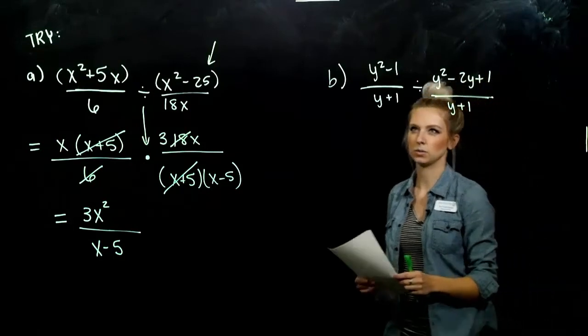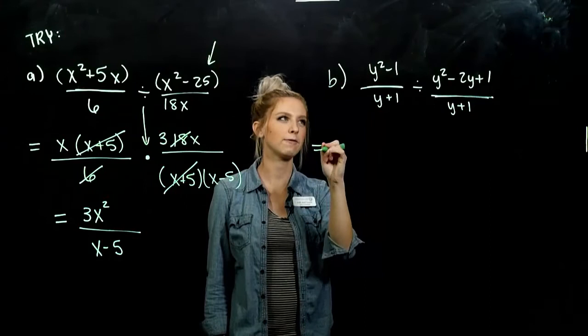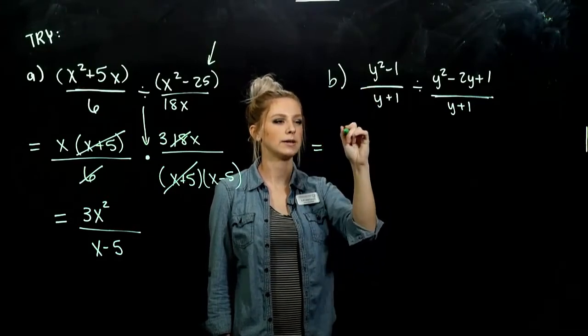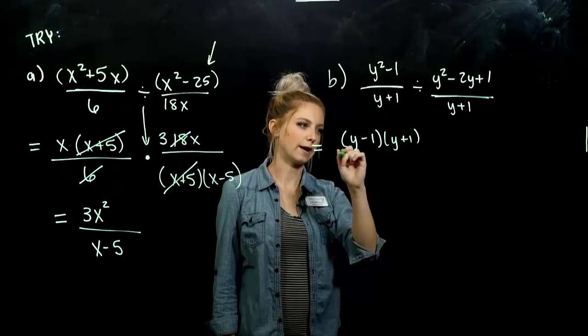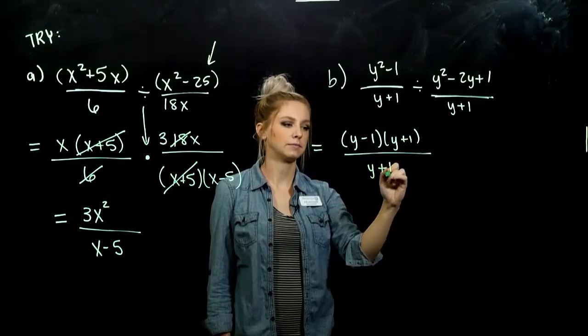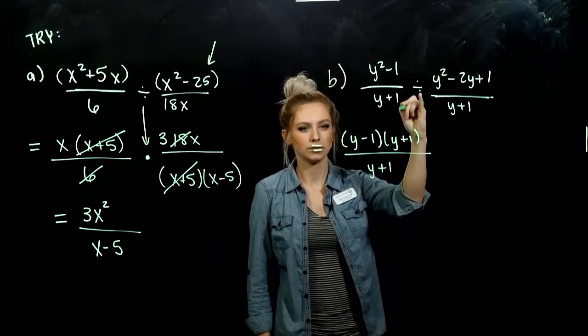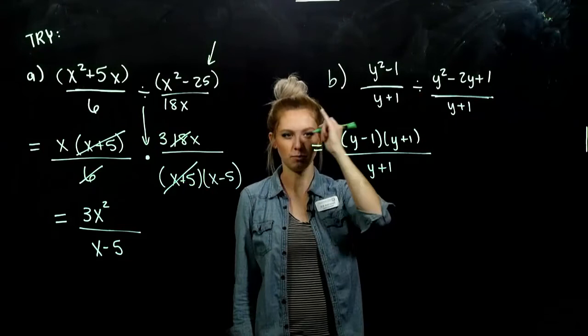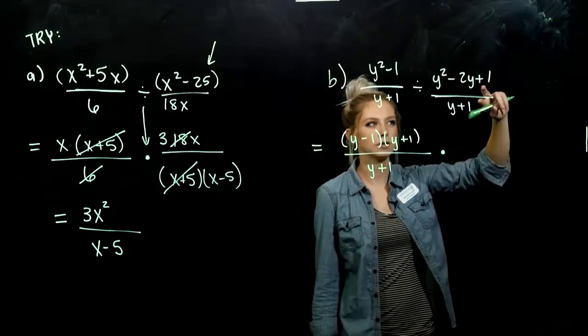And the last one. Again, the first one isn't going to change. Nothing flips around, but we can factor. The top one is a difference of squares. So those are able to factor. And down below, it's already broken down as far as we can go. And I need, again, to change division into multiplication. So I need to multiply by the reciprocal of this thing. So y plus 1 now lives in the numerator.